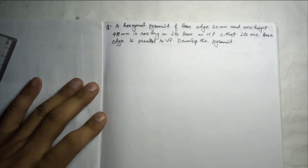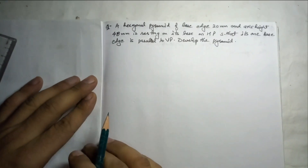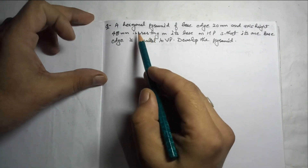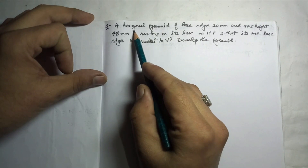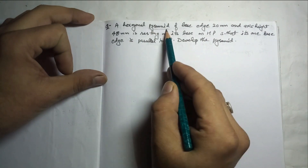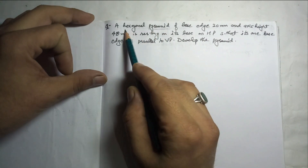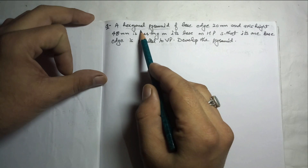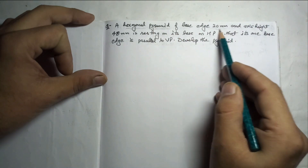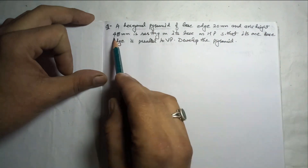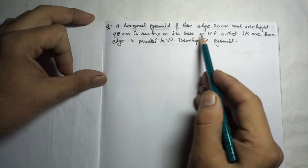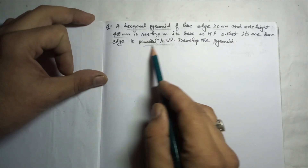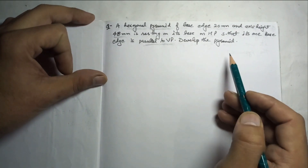We will solve one more question on the radial line method. The question says that a hexagonal pyramid — pyramid means radial line method, hexagonal means six sides — has a base edge of 20mm and axis height 48mm, resting on its base on HP such that one base edge is parallel to VP.